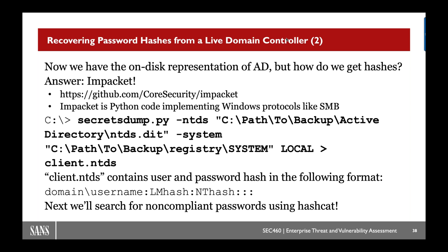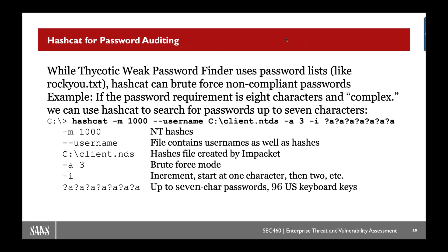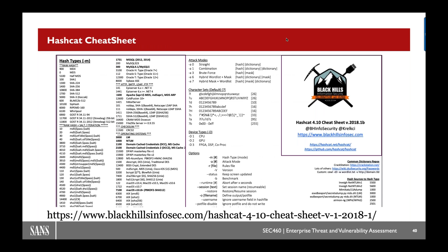Once we've pulled back the data, how do we actually extract the credentials we want to crack? We can use something by Impacket called secretsdump.py. Then we use something like Hashcat — Hashcat has the ability to use GPUs to enhance password cracking and crack even faster. It supports all kinds of modes of cracking. Here we see mode 1000 which stands for NT hashes, the most common one we see in Windows Active Directory. This here is a cheat sheet for the use of Hashcat. Black Hills also has a password cracking archive — an outstanding resource on doing more and more password attacks.